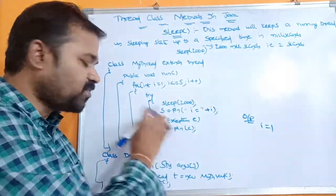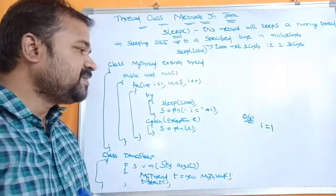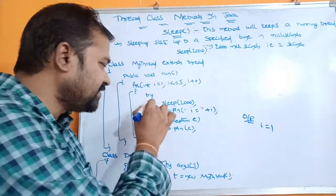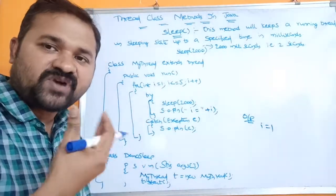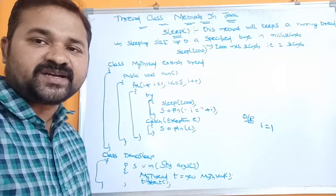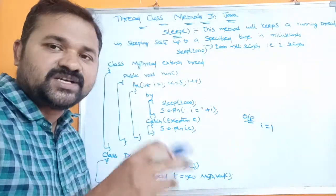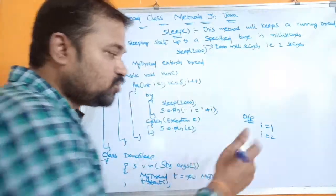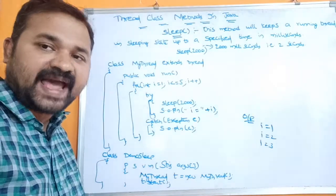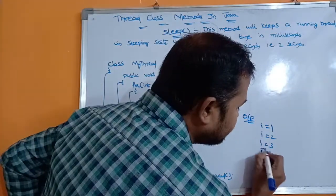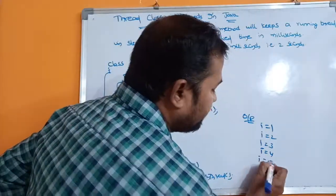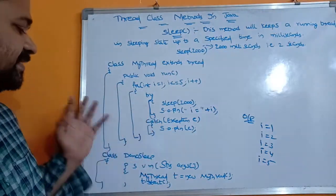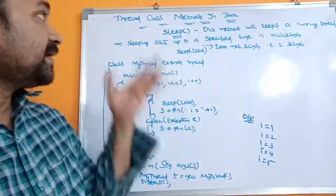Then i increments to 2, and 2 <= 5 is true, so the try block executes again. sleep(2000) puts the thread to sleep for two more seconds, after which we get output i = 2. This repeats: after two seconds i = 3, after two more seconds i = 4, after two more seconds i = 5. Then i becomes 6, and 6 <= 5 is false, so control exits the for loop, the run method, and the class.